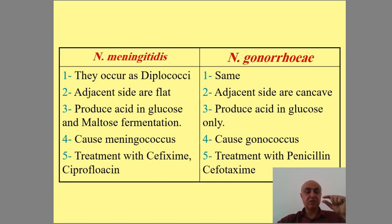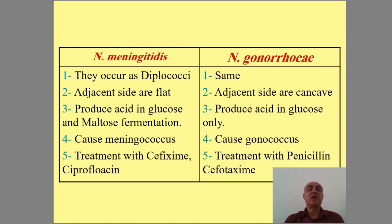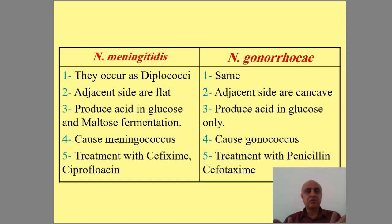These bacteria produce acid from glucose and maltose. What does this mean for differentiation? If the bacteria ferments glucose and maltose, it is Neisseria meningitidis. If it ferments glucose only — not maltose — it is Neisseria gonorrhoeae. This is the key biochemical distinction between the two species.